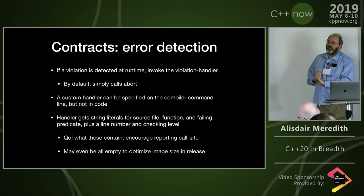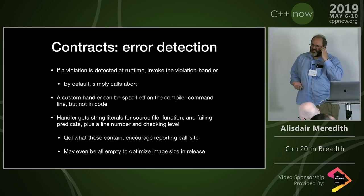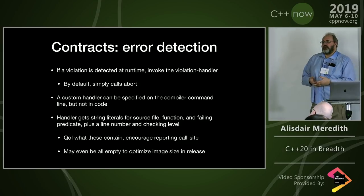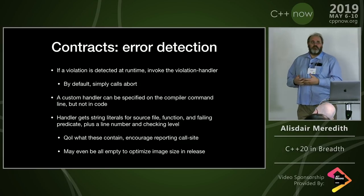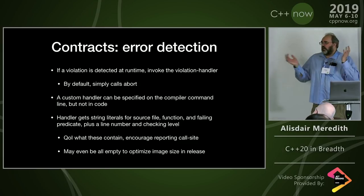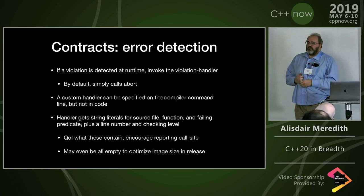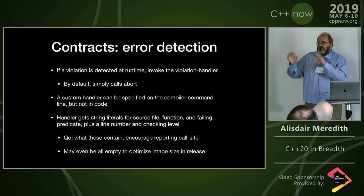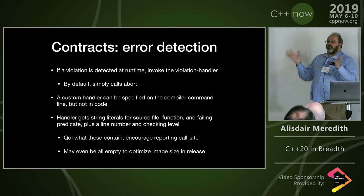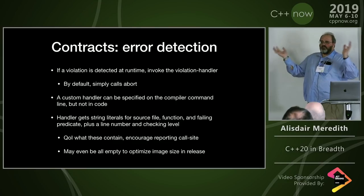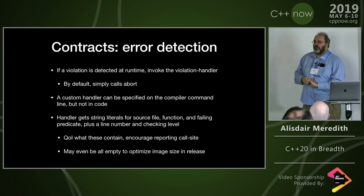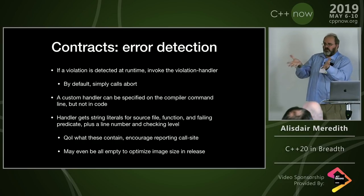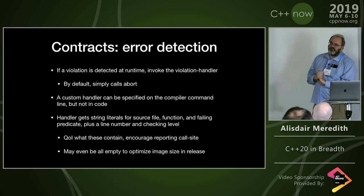Regarding what information the violation handler contains: ideally you want the call-site information — the code that violated your precondition is the bug, not the code that detected the violation. We're encouraging this as a quality-of-implementation recommendation. If you're really concerned about overhead, you can use empty strings and zero line counts — just to get the detection-and-abort behavior while minimizing static storage for all those strings, which may matter in embedded systems.